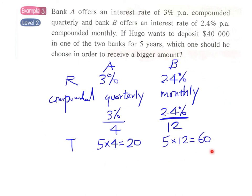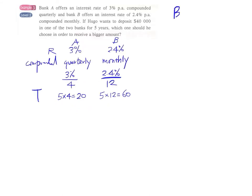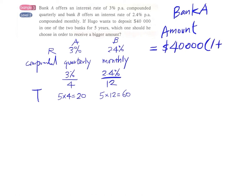For Bank A, we calculate the amount using the compound interest formula. We have P = $40,000 multiplied by (1 + 3%/4) — the adjusted interest rate — raised to the power of 20. Using our calculator, we get the answer: $46,447.